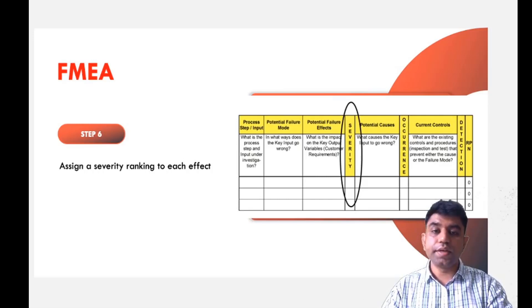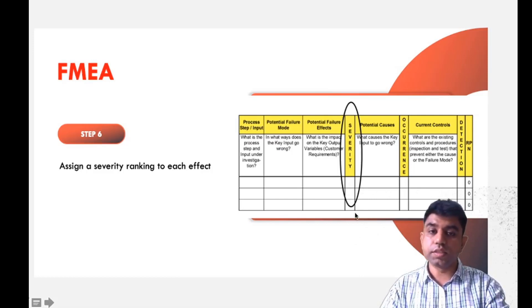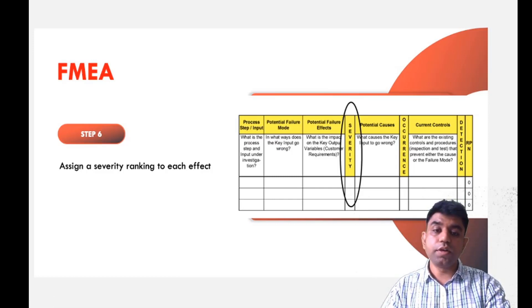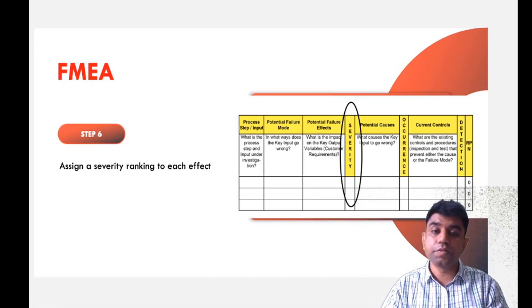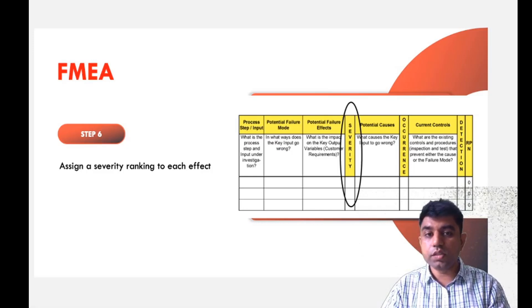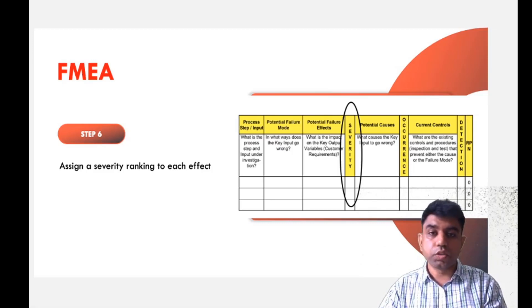The sixth step is to assign a severity ranking to each effect. In casting, we get different effects such as porosity, surface roughness, or cracks on the upper part. We need to give a severity ranking. Surface roughness is the least severe because it can be easily corrected with removal processes. But porosity is not easy to recover once the part has been cast, so the severity of that process would be higher.